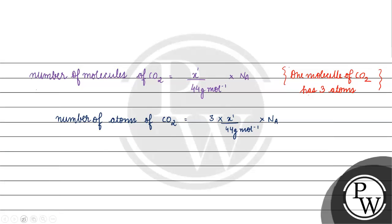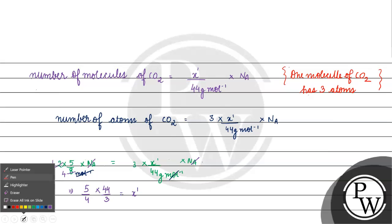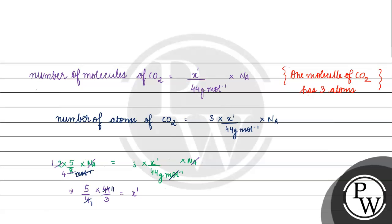Now we equate the number of atoms of both. We had 2 into 5 by 8 into Avogadro's number for oxygen atoms, equal to 3 into x dash by 44 into Avogadro's number for carbon dioxide atoms. Cancelling Avogadro's number, we get x dash equals 5 by 4 into 44 by 3, which equals 55 by 3 grams.